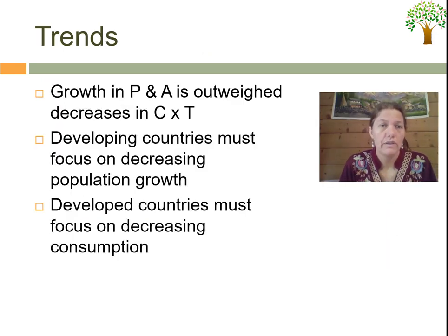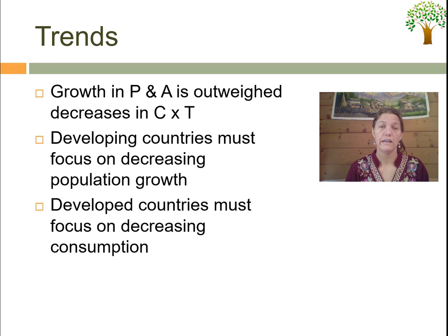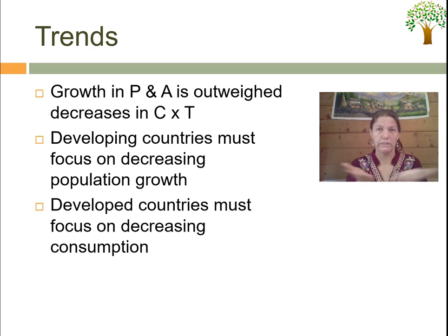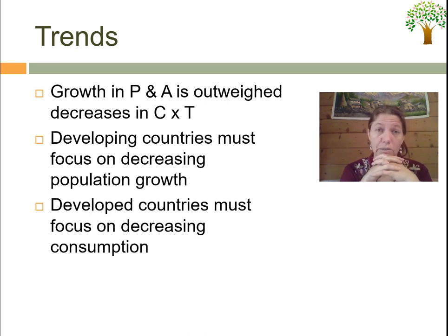Looking at current trends: even though we consume less per unit and technology improves, population growth and affluence growth are outweighing these gains, keeping us in a rough status quo. John C. Ayers concludes that developing countries of the global south must focus on decreasing population growth — which is already quite successful — while developed countries must focus on decreasing material consumption.